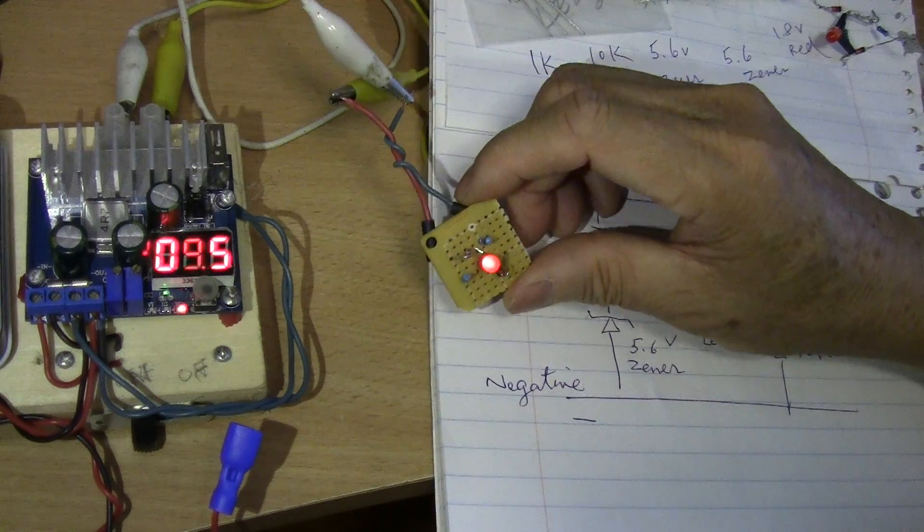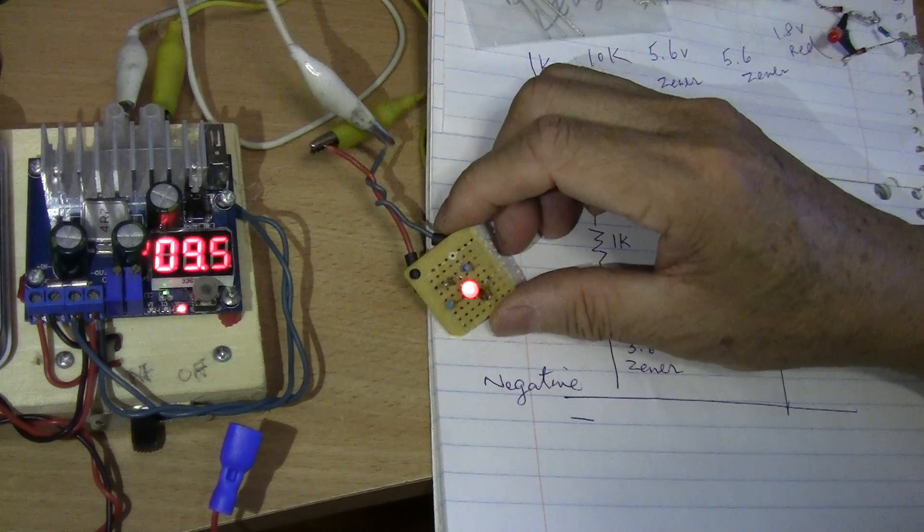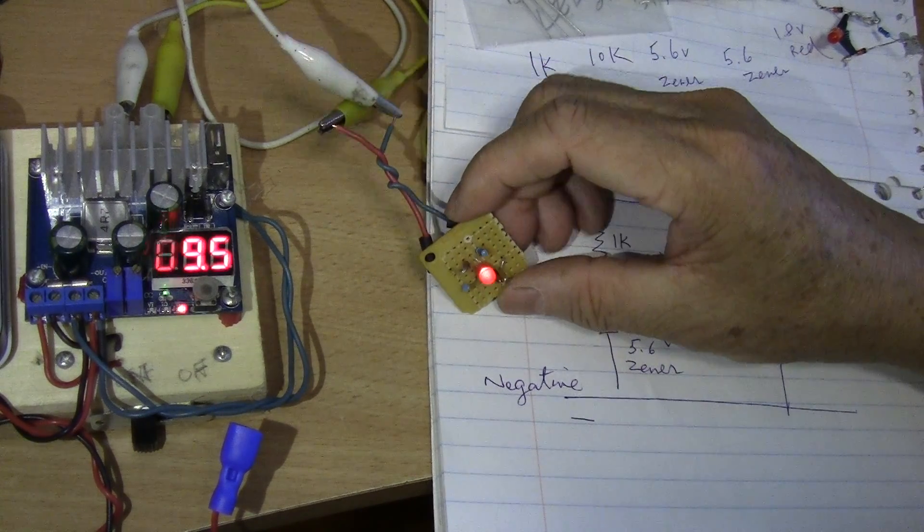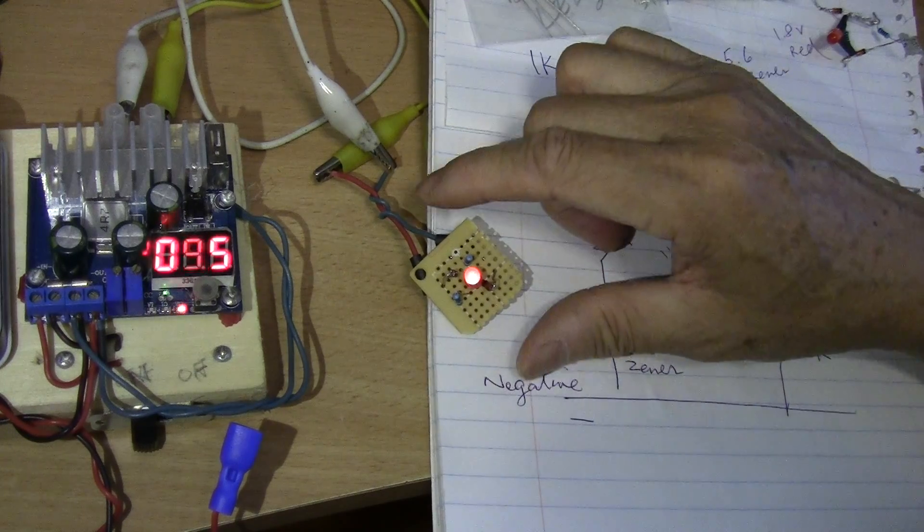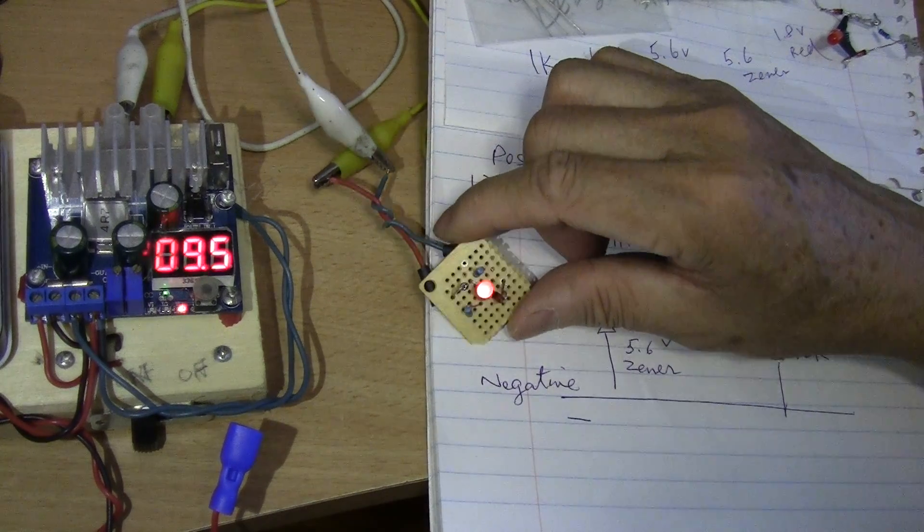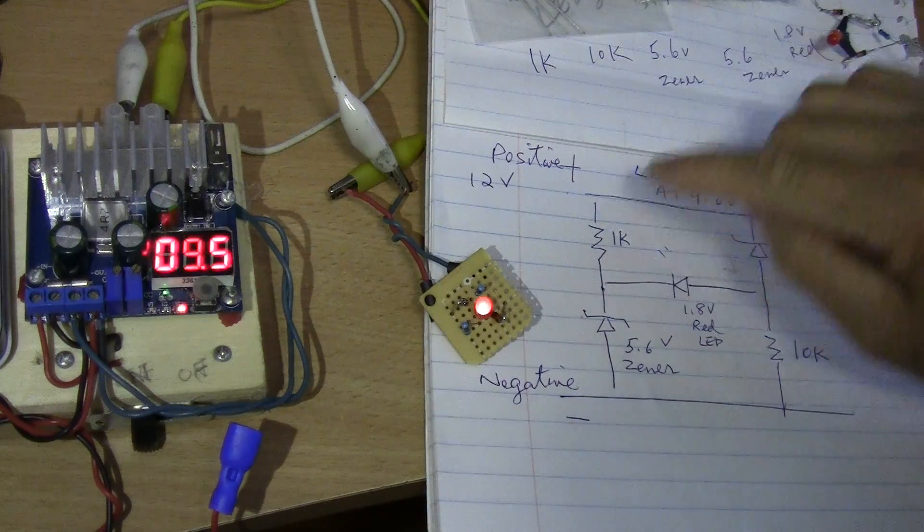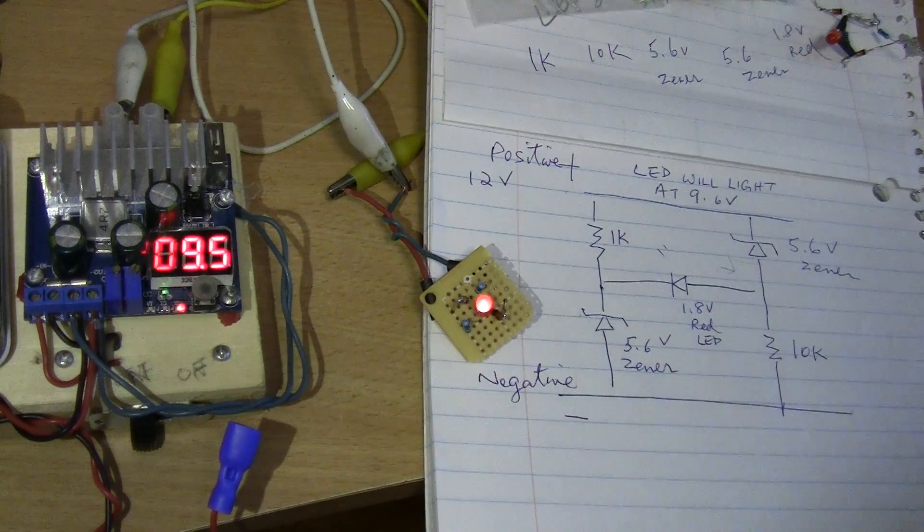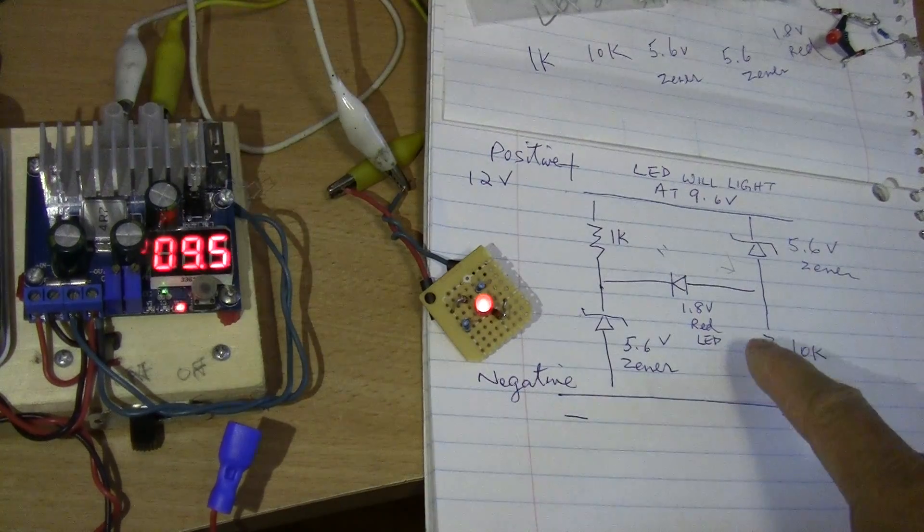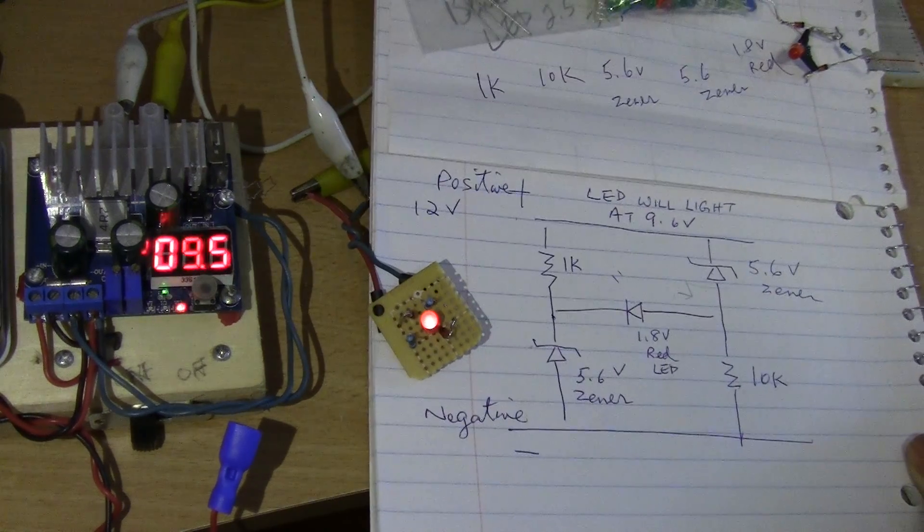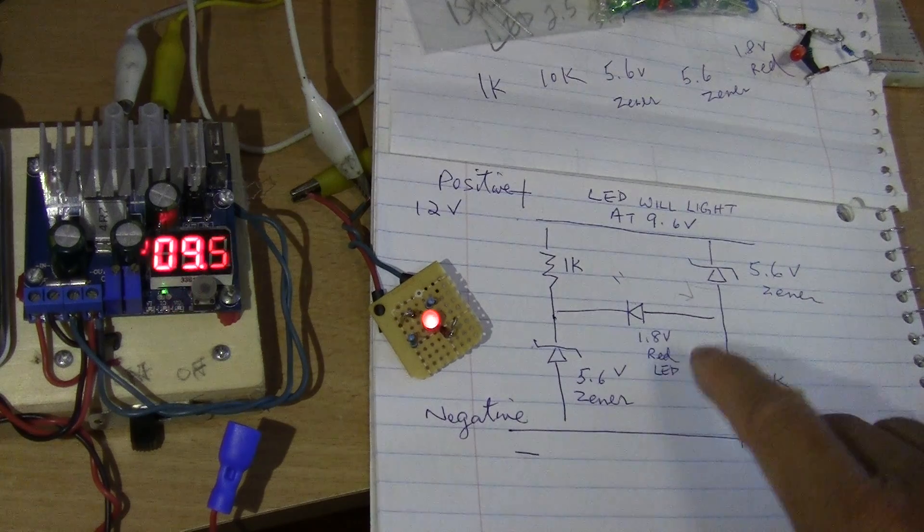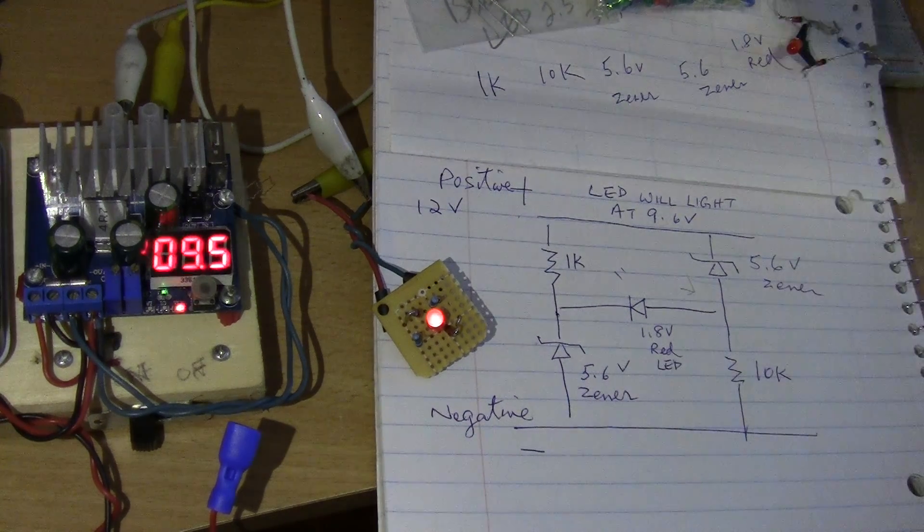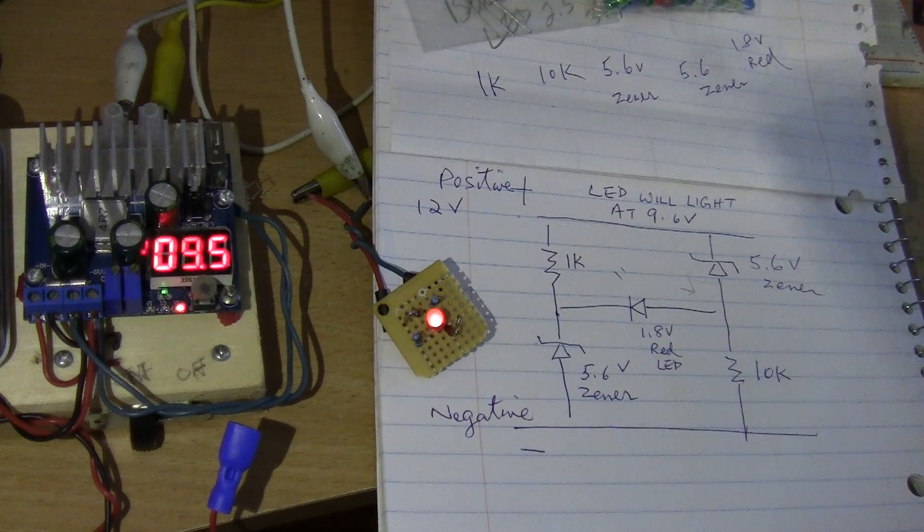There is no transistor. The whole thing consists of one red LED, one 10K resistor, one 1K resistor, and then two 5.6V zener diodes. And the circuit information is here. I will take a picture of this so that you can see what it is like and maybe make one for yourself.